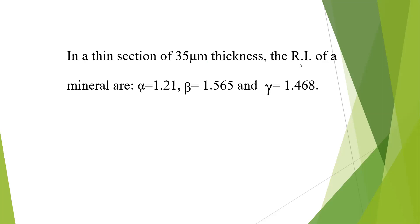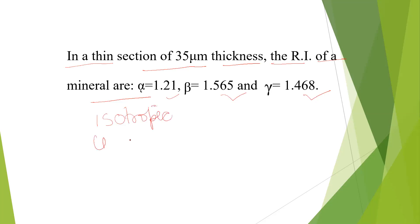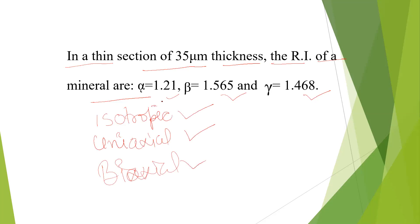Without wasting your time, let's see the question. In thin sections of 35 micrometers, the refractive index of a mineral are: alpha is one value, beta is another, and gamma is another. The question is whether it is a uniaxial mineral, biaxial mineral, or isotropic mineral — those are the basic fundamental properties we need to determine.